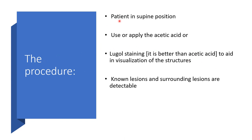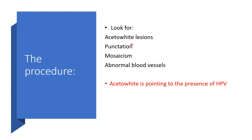For the procedure, the patient will be in the lithotomy position with heels in the stirrups. We apply acetic acid or Lugol's iodine — Lugol's being better than acetic acid — to aid in visualization of the structures. Normal lesions and surrounding lesions will be detectable. We look for acetowhite lesions, punctations, mosaic patterns, and abnormal blood vessels.